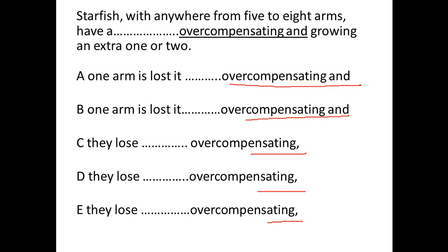Now the question is: do we need AND or not? Or we can say, do we have a list of things? If you look at the part after the underlined portion, it says 'growing and extra 1 or 2.' So here 'overcompensating' and 'growing' are parallel. So there is a list, and if there is a list we need AND.